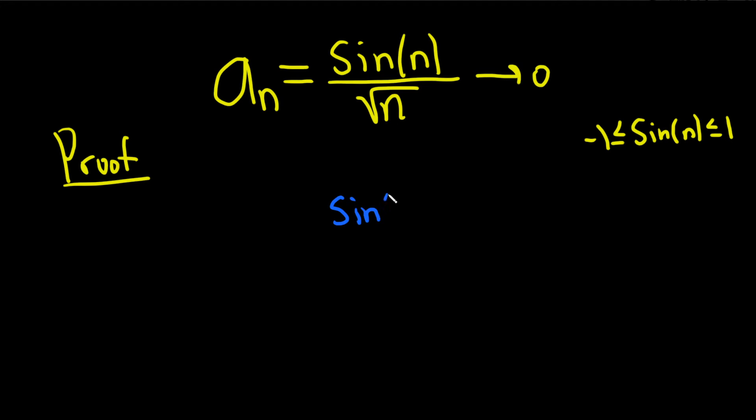So sin(n) over sqrt(n). Now we want to show that this is trapped between two other sequences that approach zero.